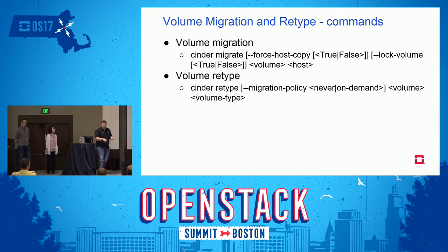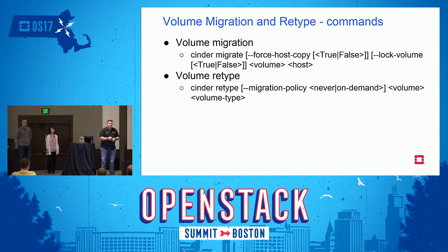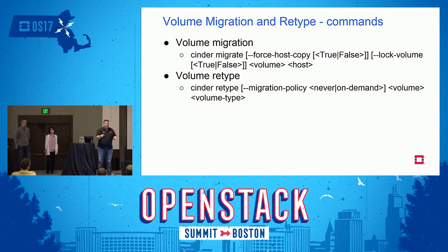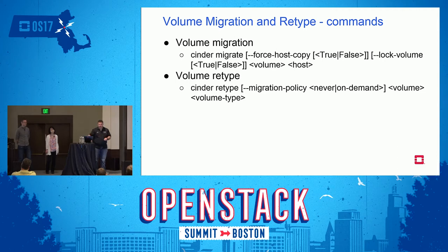The two commands that enable this are 'cinder migrate' and 'cinder retype'. For migrate, one interesting point is whether you lock the volume — if you don't lock it, you can do migration on a volume that is currently attached. The lock controls whether you can cancel it in the middle of the move. For retype, the migration policy option is important: if you set 'never' and the current backend doesn't satisfy the new type, it will not retype; if you set 'on-demand', it will move to backend storage that satisfies that type.